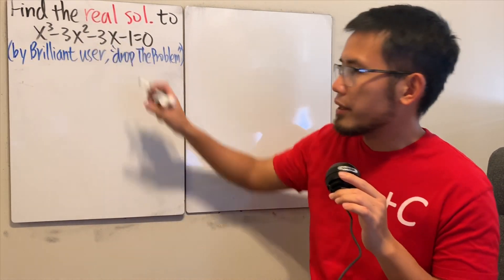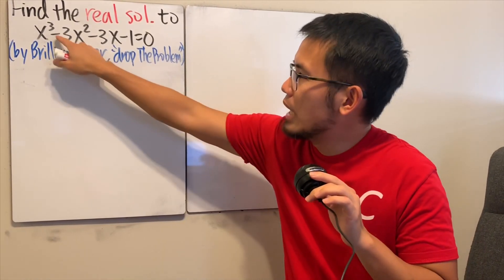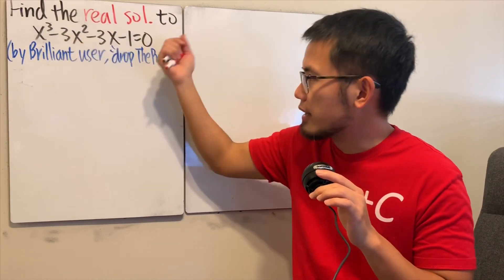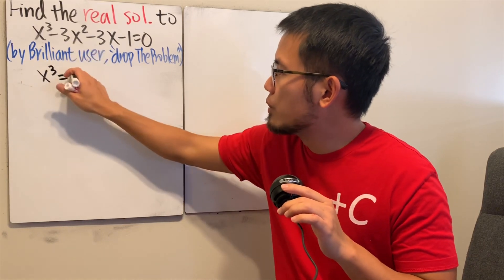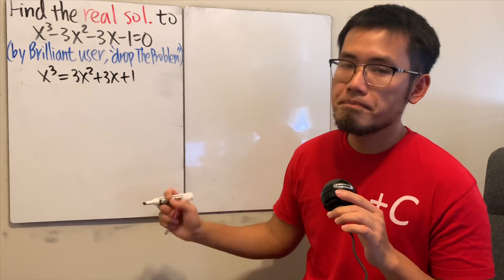Notice this right here. It's almost like (x+1)³, but not quite, because we have all the negatives right here. It's okay. Let me just bring this to the other side. So we get x³ = 3x² + 3x + 1. Great.